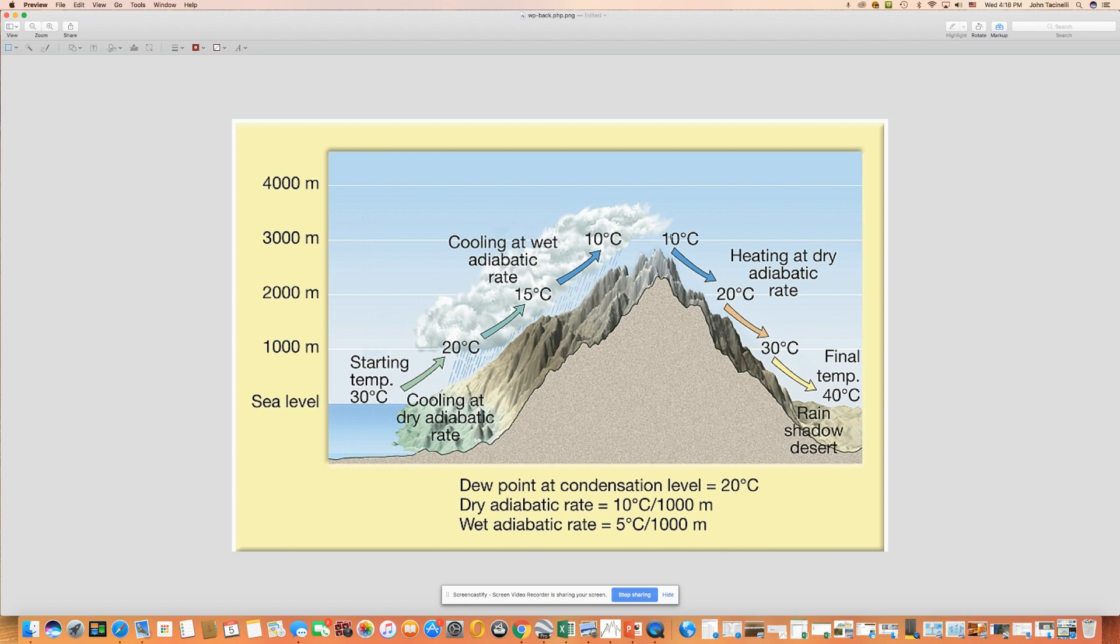Now, as it goes over the top and starts going down the other side, it's going to be compressed and heat up at the dry adiabatic rate. It's going to immediately go away from its dew point. Since all this moisture has been removed, the dew point temperature was down to 10 degrees. At 10 degrees, it's at 100% relative humidity. But as it goes down the other side and starts heating, we're going to start going away from the dew point.